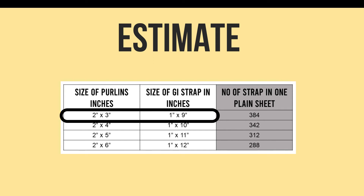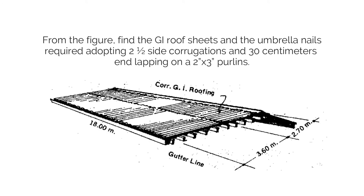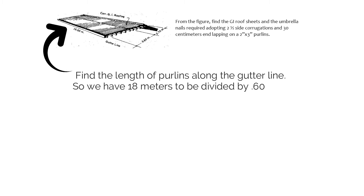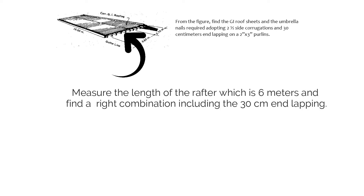For the sample problem, we find the number of roofing sheets using 2.5 corrugations together with the nails needed. Step one: find the length of purlins along the gutter line. We have 18 meters divided by 0.60 since the problem requires 2.5 corrugations. Dividing 18 by 0.60 equals 30, so for the entire row, we need 30 pieces of corrugated sheets.